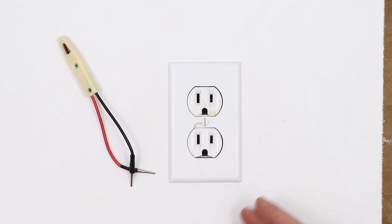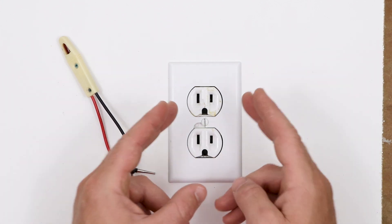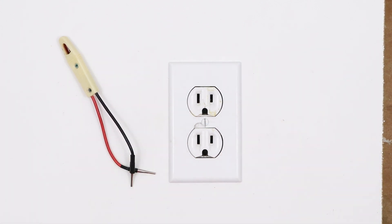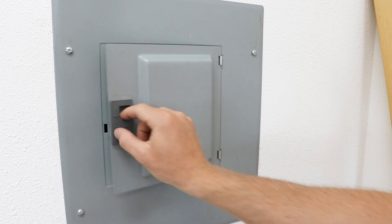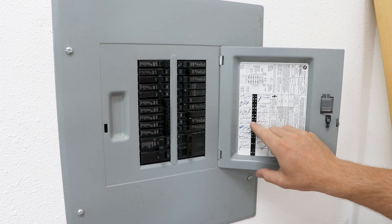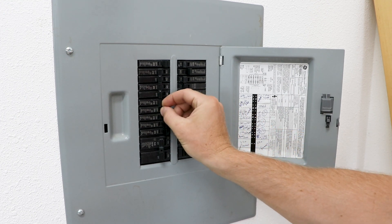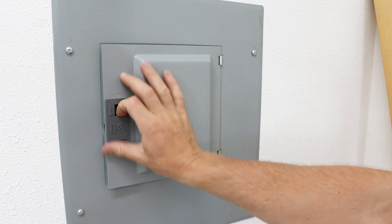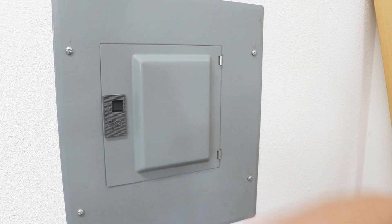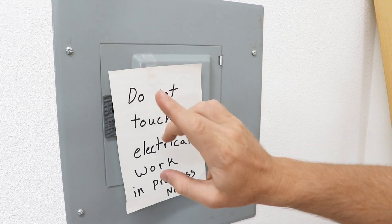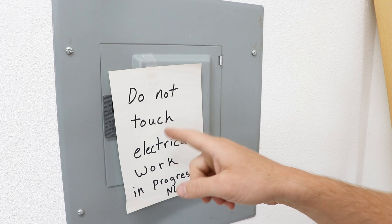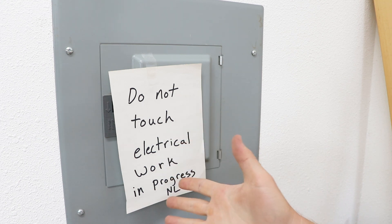Now I'm going to go find the service panel in order to cut the power to the circuit that this receptacle is part of. When you locate your sub panel, open it up and identify which breaker it is you need to turn off. Go ahead and flip it to the off position, close your panel up and mark it with a sign to keep anybody from opening that up and potentially turning back on that breaker and frying you.